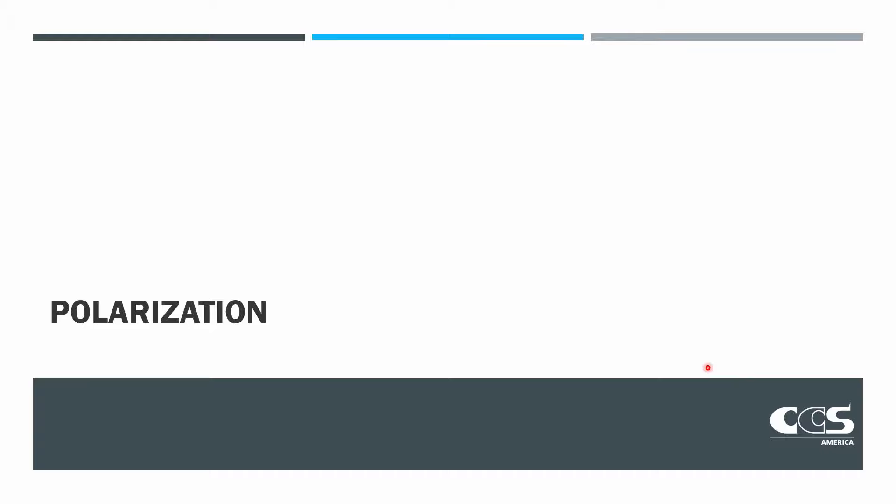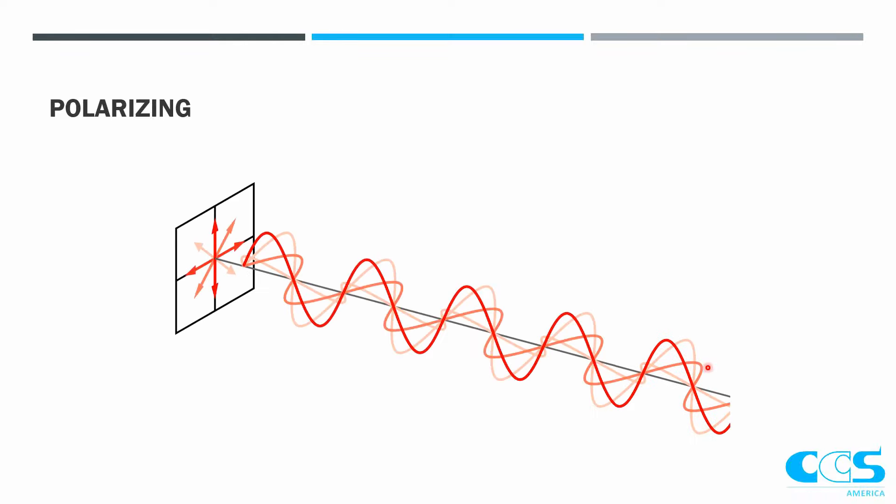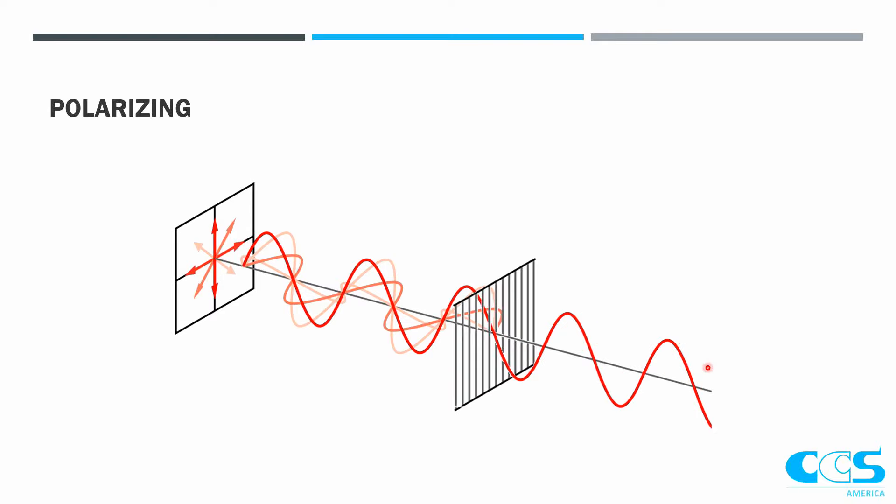Next, I want to talk about polarization. When light is polarizing, we have light that shines out and oscillates in many different directions. What we want to do is make that light only oscillate in one direction. So we add a polarizing filter and essentially block all of the light except for, in this example, all of the light that is oscillating horizontally.